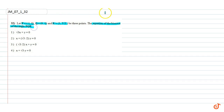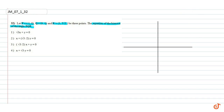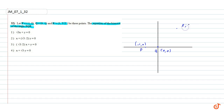First, we will draw these points on the coordinate axis. The origin Q is at (0, 0). The second point P is at (-1, 0), and the third point R is at (3, 3√3). This gives us our triangle PQR.